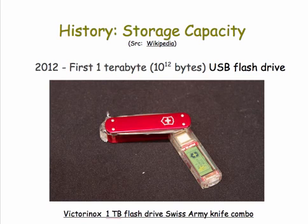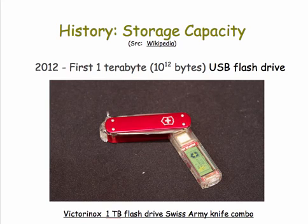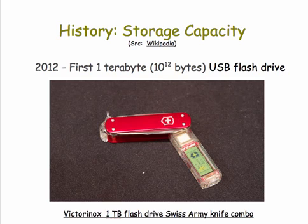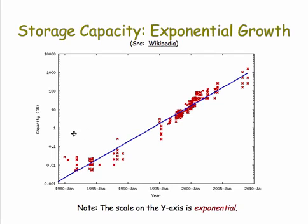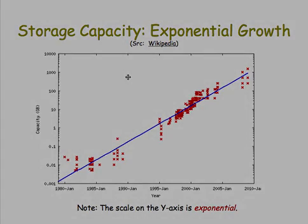In 2012, we saw the release of the first terabyte USB flash drive — 10 to the 12th bytes fitting in your pocket. If you graph the amount of storage on the y-axis over time, you get a curve that looks exponential, because the y-axis increases not by a linear amount but by powers of 10: 1, 10, 100, 1,000, and so forth. If you made the y-axis linear, this graph would curve upward in an exponential fashion.